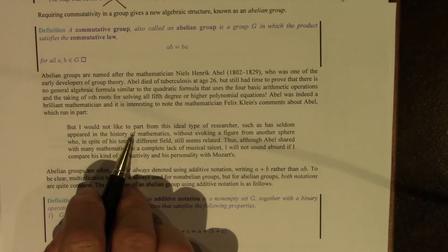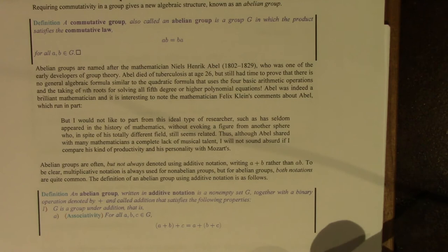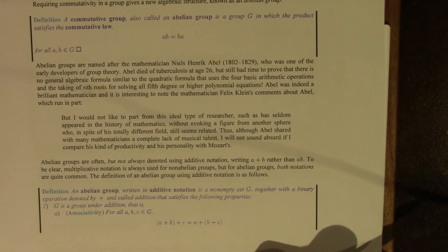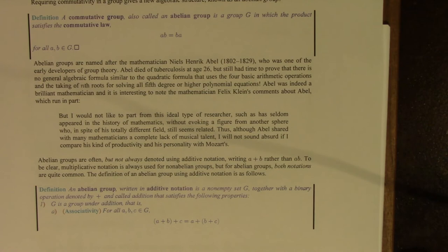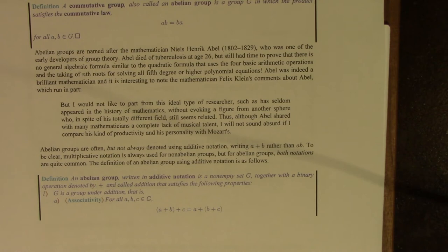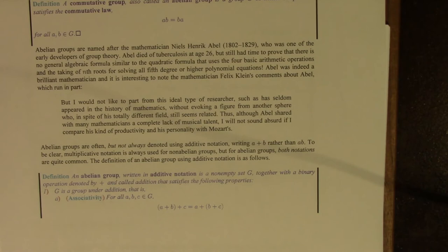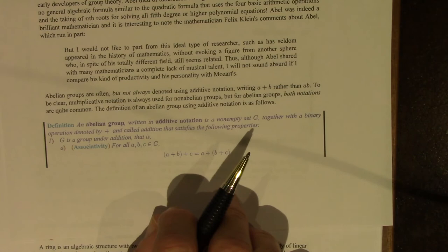Nevertheless, Abel had time to prove that there is no general algebraic formula — similar to the quadratic formula, using only the four basic arithmetic operations and the taking of nth roots — for solving all polynomial equations of degree 5 or higher. This is one of the cornerstone achievements in all of mathematics. There is also a famous mathematician named Felix Klein, who made a remarkable comment about Abel: 'I will not sound absurd if I compare his kind of productivity and his personality with Mozart's.' That is high praise indeed.